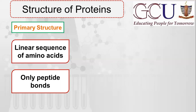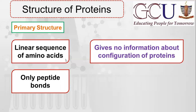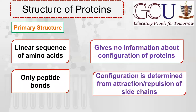This is why the stability of primary structure is low. Dear students, the primary structure gives us no idea about the configuration of proteins, because the configuration or conformation of a protein is its three-dimensional arrangement. This is a linear sequence, so it gives no information about the three-dimensional structure. Configuration is determined by the attraction or repulsion of side chains. As we saw in the amino acid lecture, side chains are either polar or non-polar. Different types of side chains repel each other, while similar side chains attract each other, giving the protein a particular configuration.